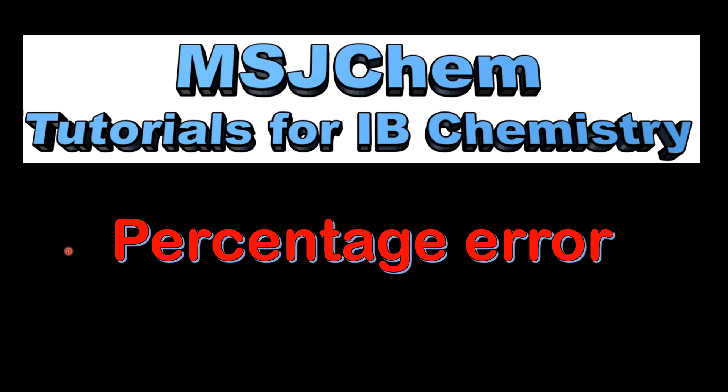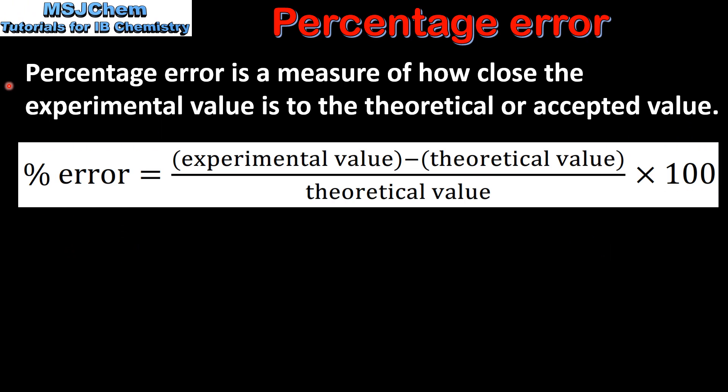This is MSJChem. In this video I'll be looking at percentage error. Percentage error is a measure of how close the experimental value is to the theoretical or accepted value.